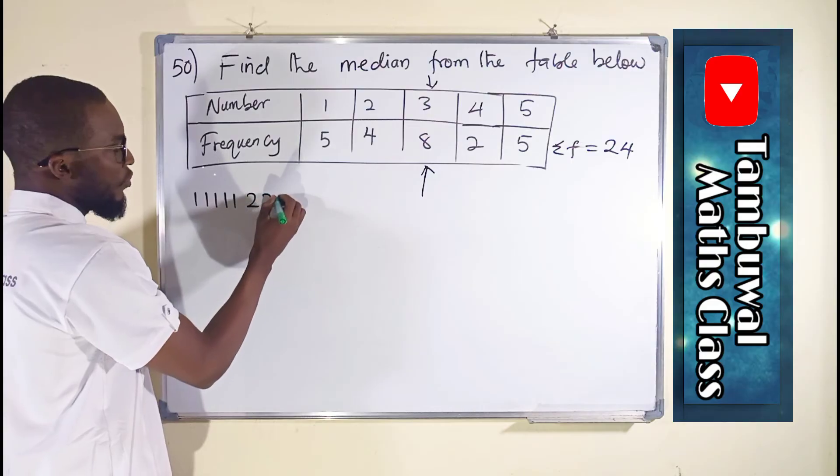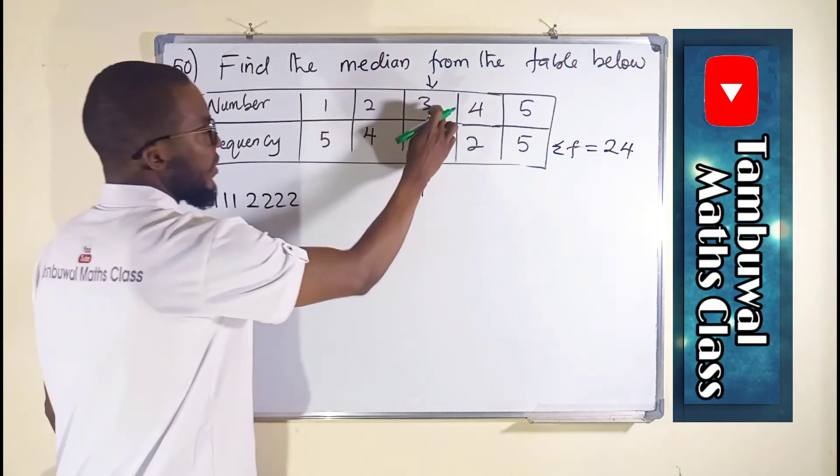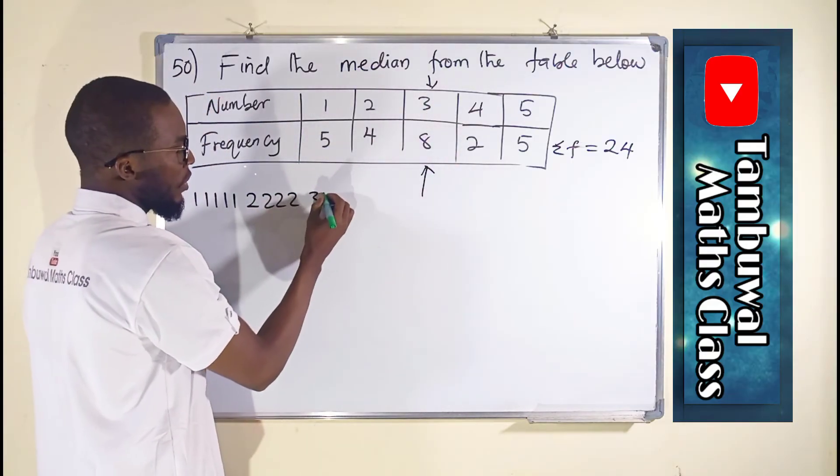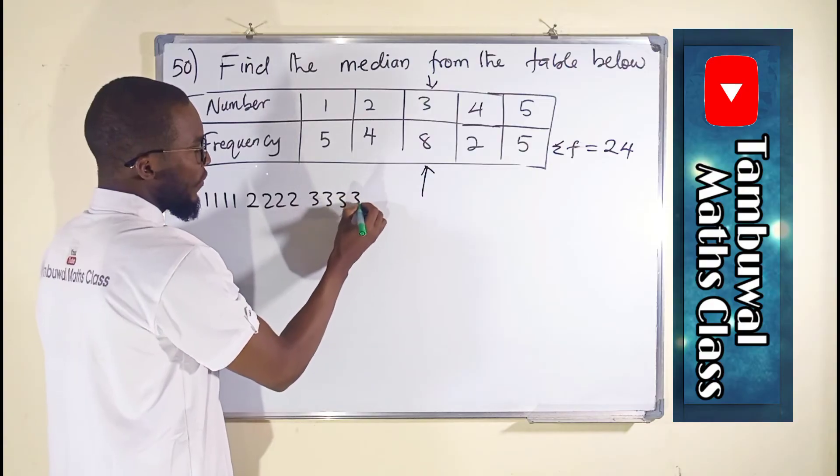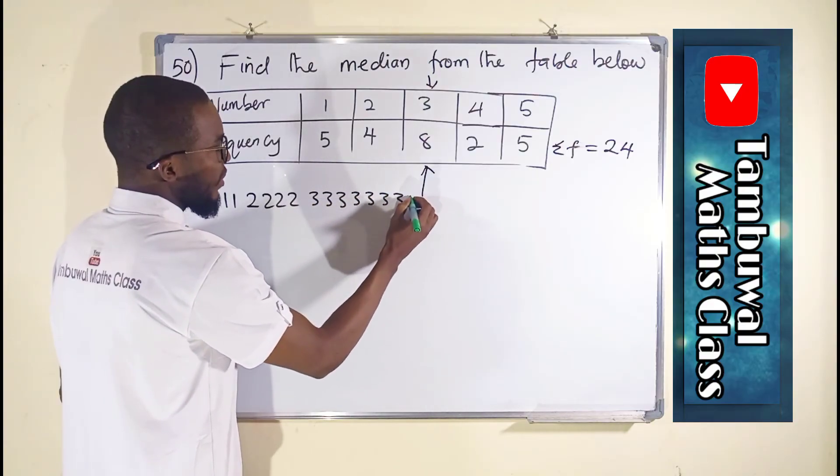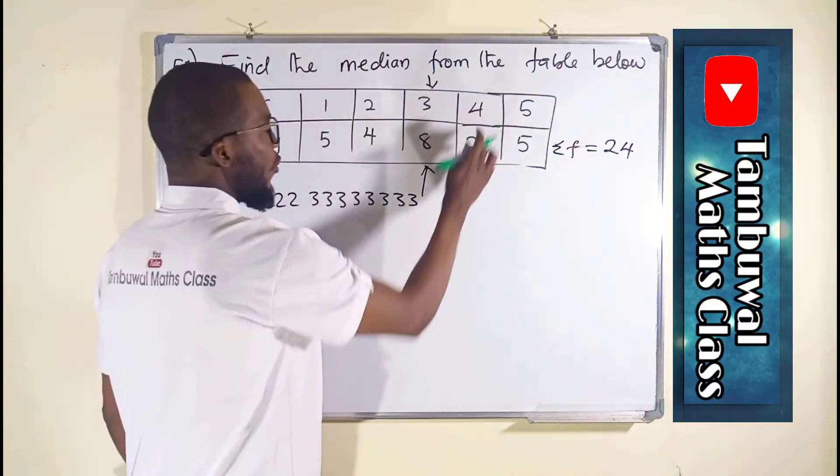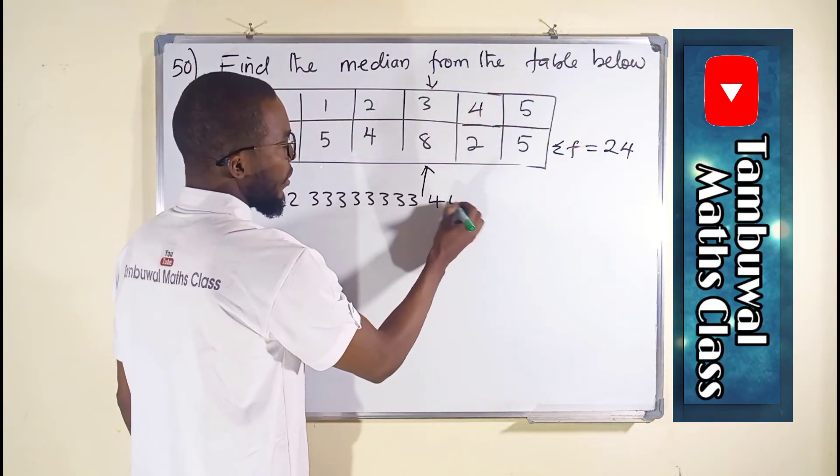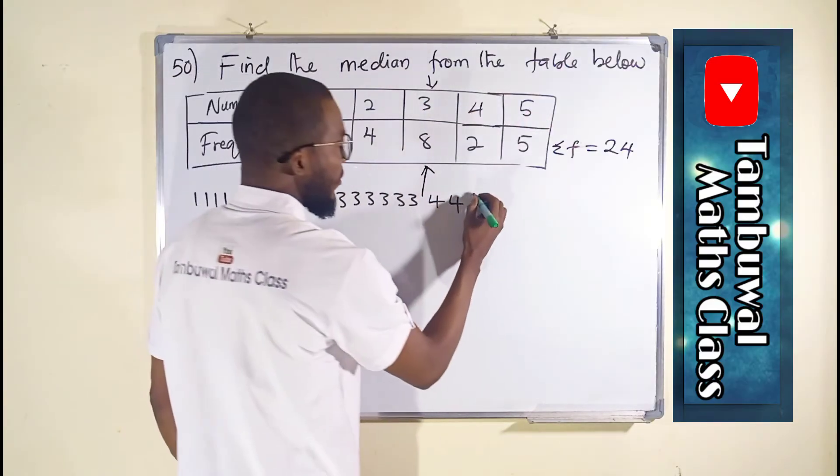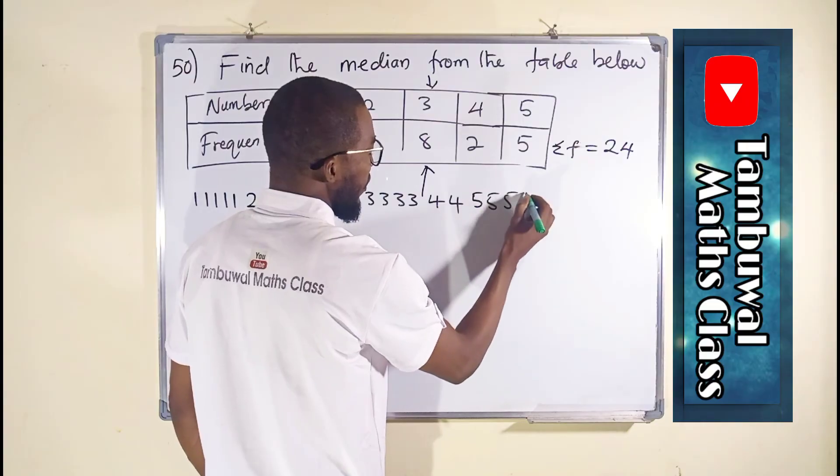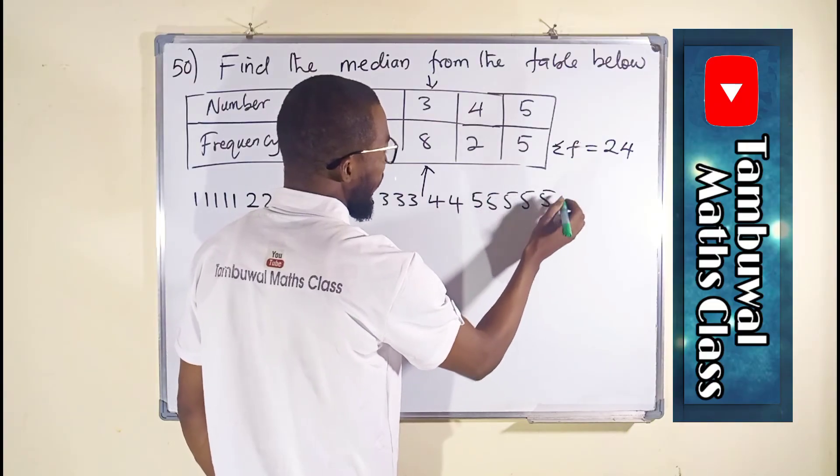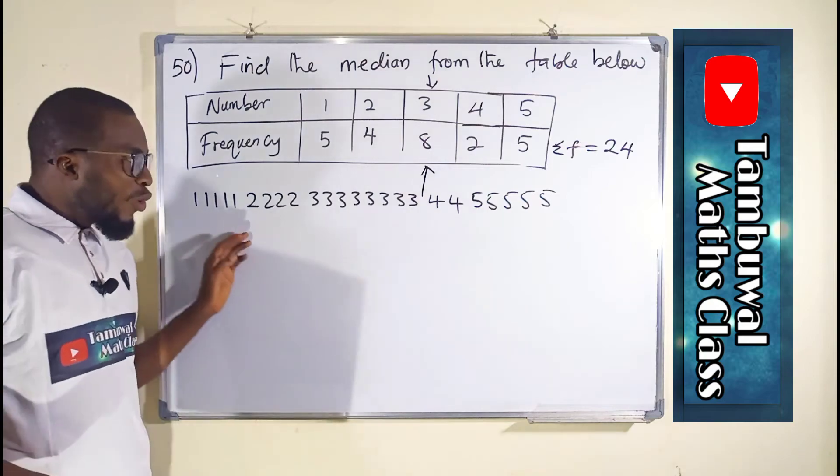The number 3 we have 8 of them: 1, 2, 3, 4, 5, 6, 7, 8. The number 4 we have 2 of them: 1, 2. The number 5 we have 5 of them: 1, 2, 3, 4, 5.